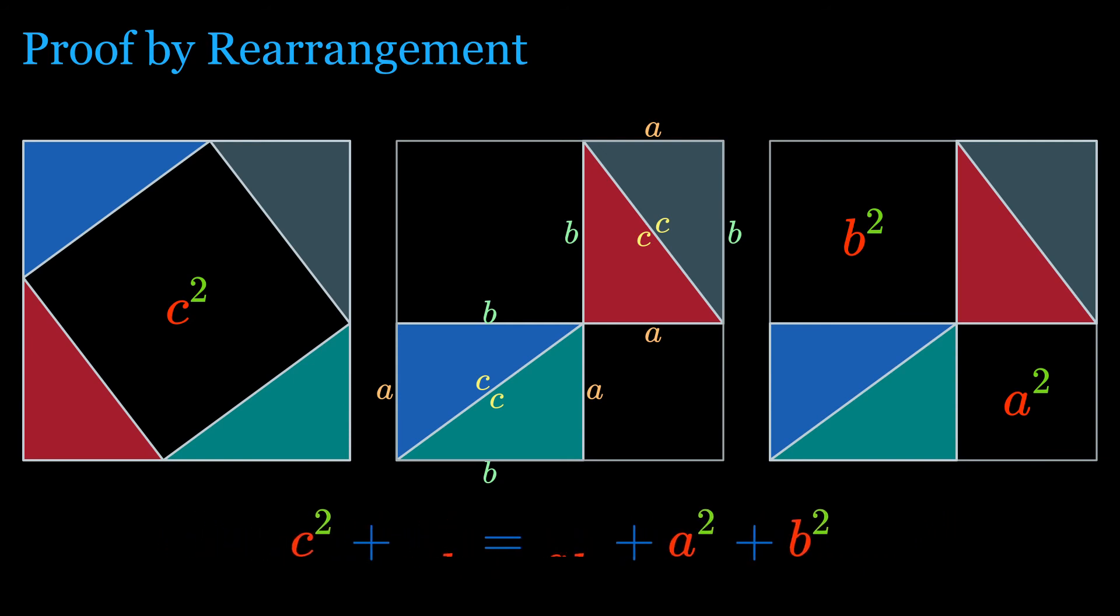As a result, C square equals A square plus B square.